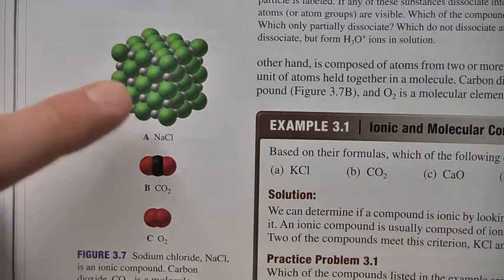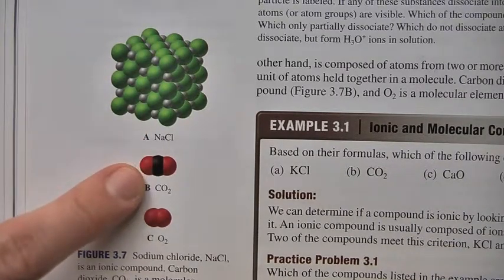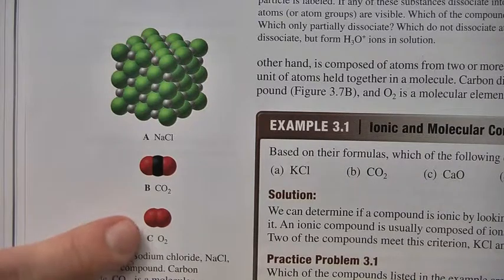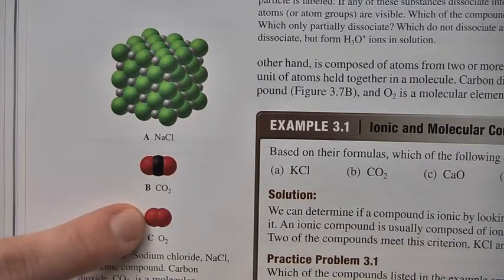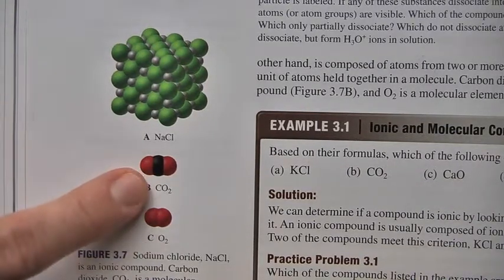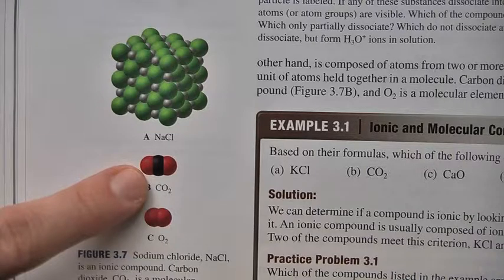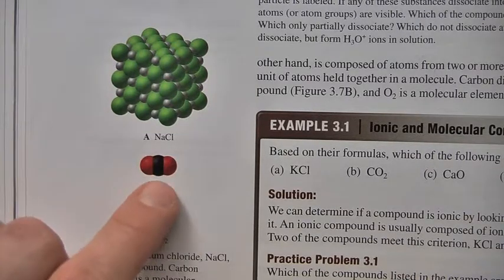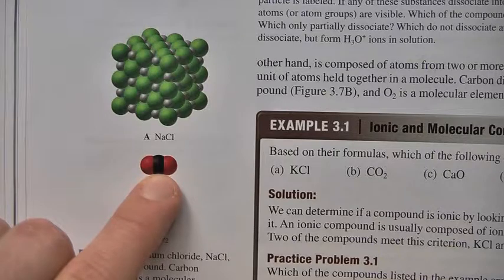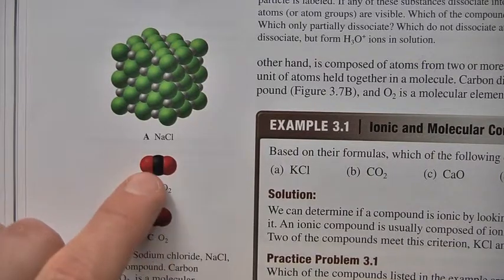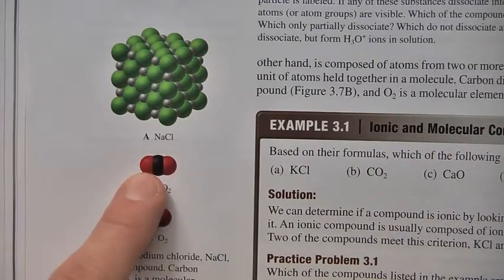Now let's talk about molecular compounds. Here are two examples: elemental oxygen and CO2. Molecular compounds have lower melting and boiling points, but why? The interaction between the middle carbon and the two oxygens on either side — that bond is very, very strong.